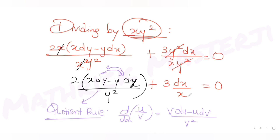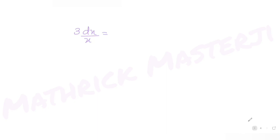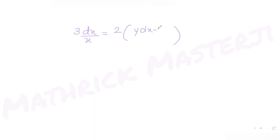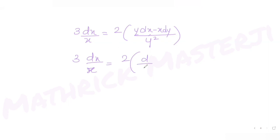Rearranging so it fits the quotient rule form, taking the 3dx/x term to the other side and flipping the sign: 3 dx/x equals 2 times (y dx minus x dy) / y². This is now in the form (v du minus u dv)/v², which is the derivative of x/y.